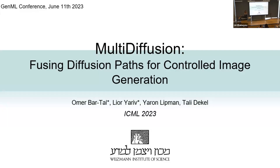I'm Lioia Rive. I'm a PhD student at the Weizmann Institute of Science, and I will be presenting a work to be presented at the upcoming ICML. The name of the paper is MultiDiffusion, and the idea is how we can fuse diffusion paths in order to have controlled and flexible image generation. It is a joint work with Omer Bertal, my supervisor Jeroen Lippmann, and Tali Deke.